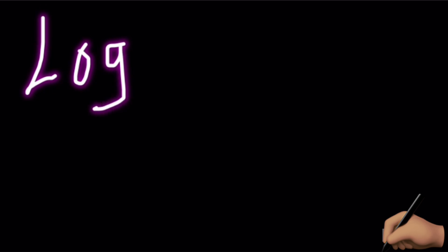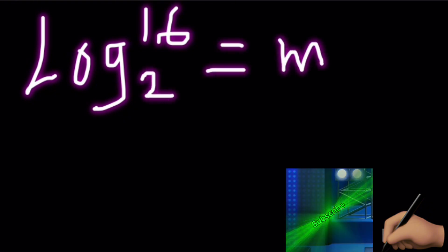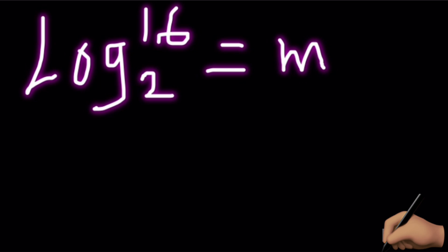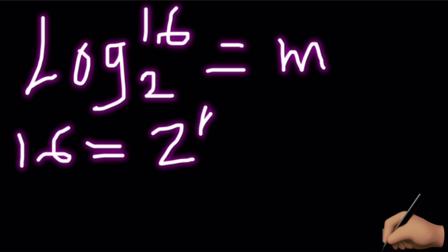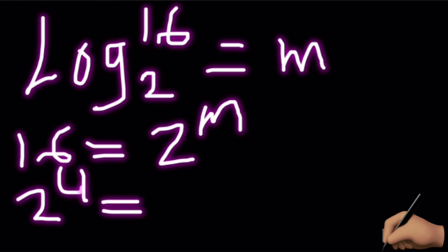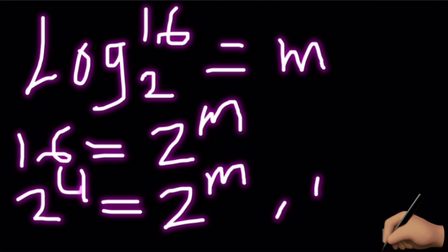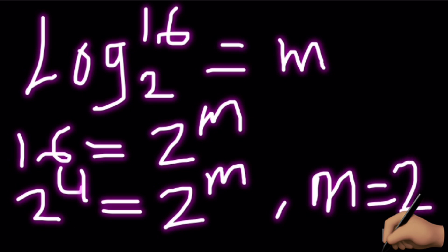Question one: log base 2 of 16 is equal to m. First, we write 16 as a power of 2, then we find the value. The expression gives us two exponent four is equal to two exponent m, because 16 expressed as a power of two is 2 to the power four. So our m is now equal to four.